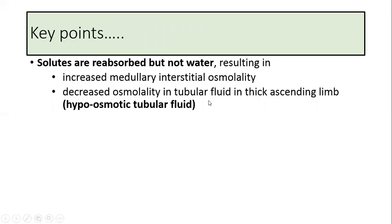At the same time, the osmolality in the tubular fluid is decreased and so the fluid which is leaving the loop of Henle to enter the distal tubule is hypoosmotic when compared to that of the plasma.